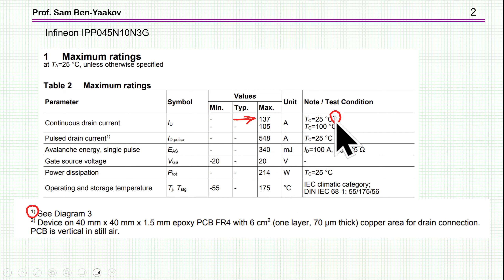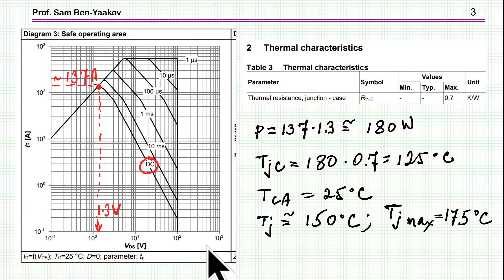There are usually some footnotes in these tables. Very important to look at the footnotes. The maximum continuous current for this transistor with case of 25 degrees is 177 amp. Now diagram 3 is the safe operating area curves. What we see here is the limits for operation, pulses, or continuous current.